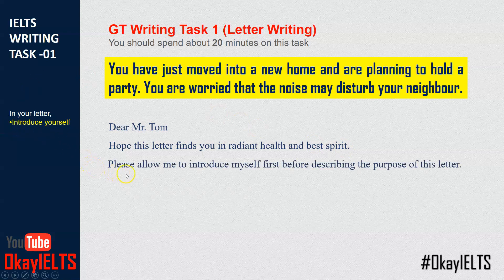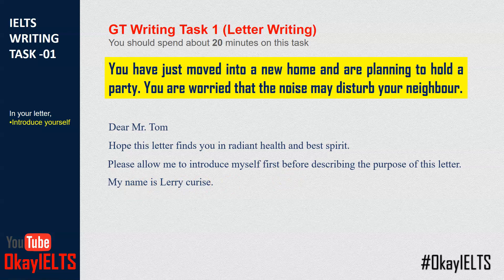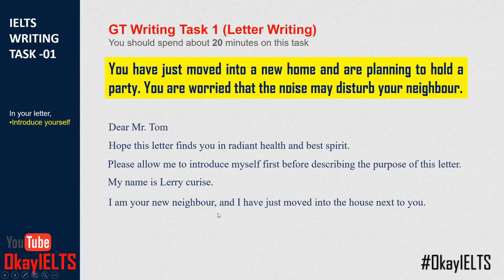The first bullet point says introduce yourself. So I write: 'Please allow me to introduce myself first before describing the purpose of this letter.' Now I'm going to talk about myself. Third sentence: 'My name is Larry Cruz.' You write your name here since you are introducing yourself. Then: 'I am your new neighbor and I have just moved into the house next to you.' Don't worry — I'm writing sentence by sentence, and all these sentences will go into one paragraph.